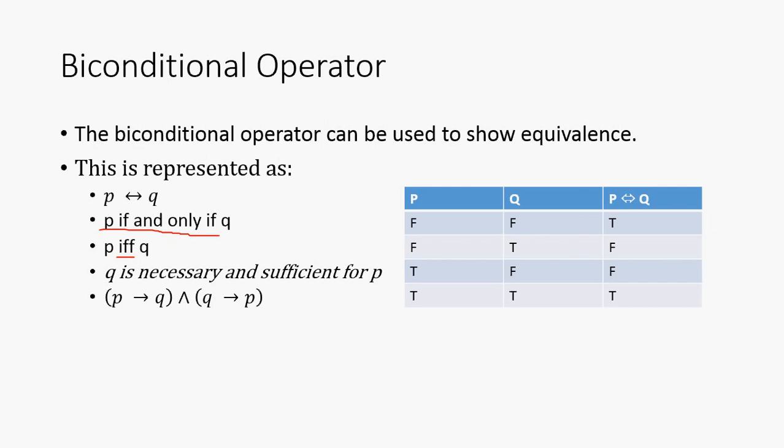Now, we'll look at the truth table here. We have our column for P, Q, and P if and only if Q. And, notice that these are true only when P and Q are the same. Like so.